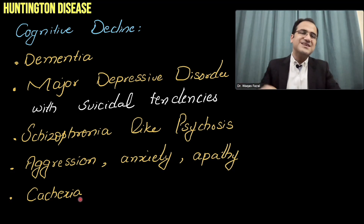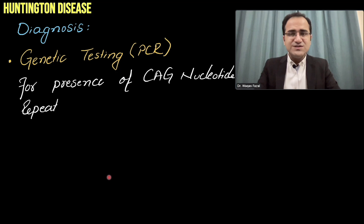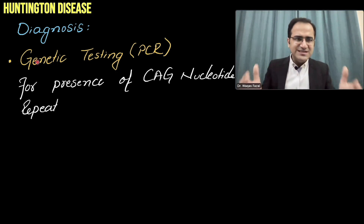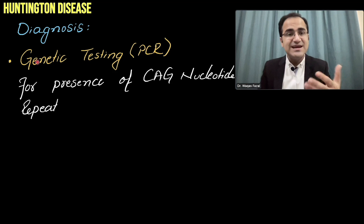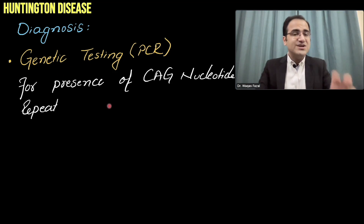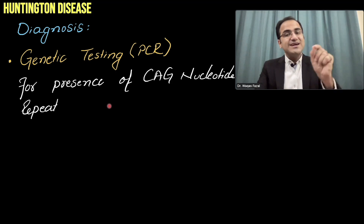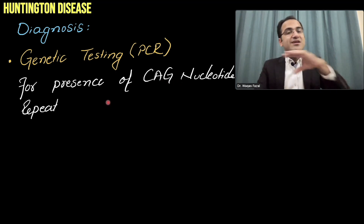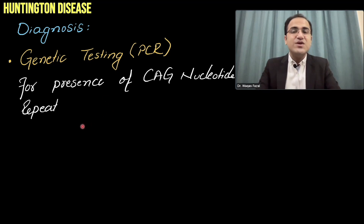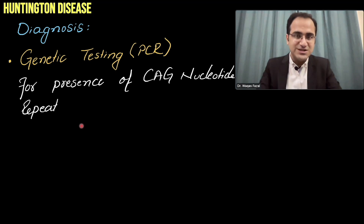Diagnosis is primarily clinical, but since the disease is familial, genetic testing and counseling are performed. PCR is used to detect the CAG trinucleotide repeats in the huntingtin gene. If one family member is affected, other family members are also tested.